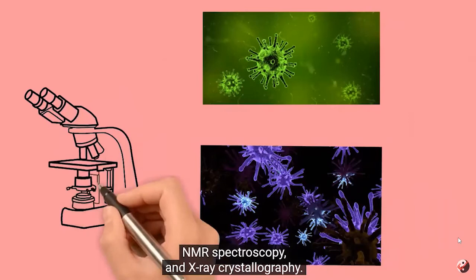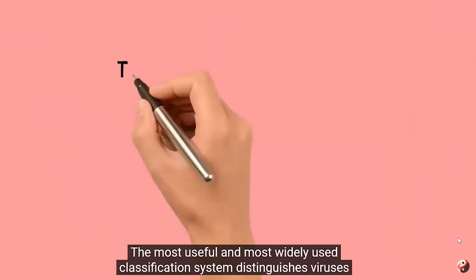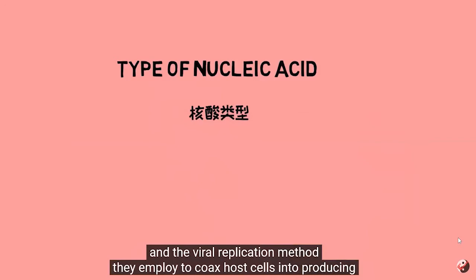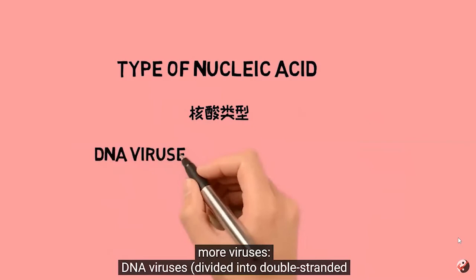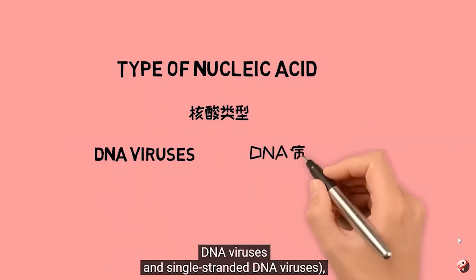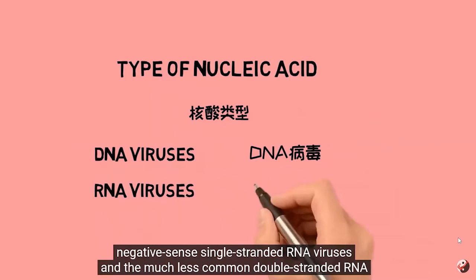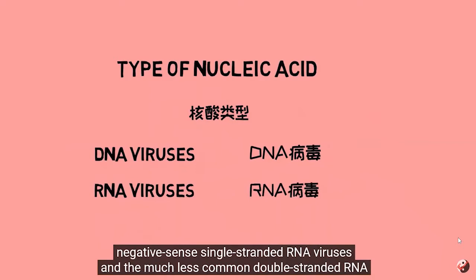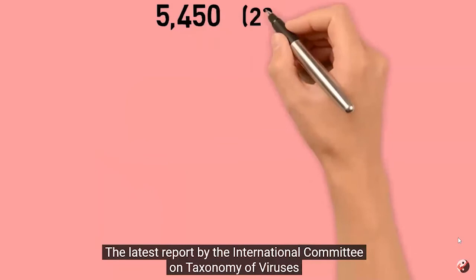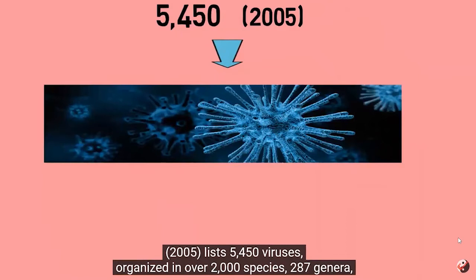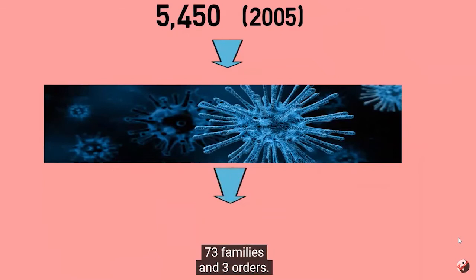The most useful and widely used classification system distinguishes viruses according to the type of nucleic acid they use as genetic material and the viral replication method they employ to coax host cells into producing more viruses. DNA viruses are divided into double-stranded and single-stranded DNA viruses. RNA viruses are divided into positive-sense single-stranded, negative-sense single-stranded, and the much less common double-stranded RNA viruses. The latest ICTV report from 2005 lists 5,450 viruses organized in over 2,000 species, 287 genera, 73 families, and 3 orders.